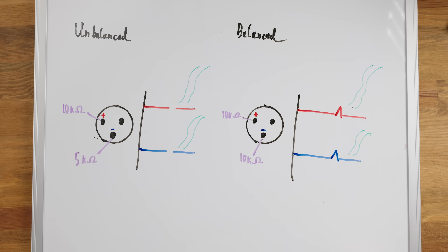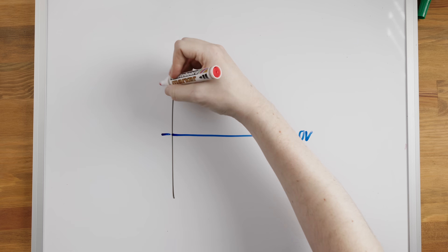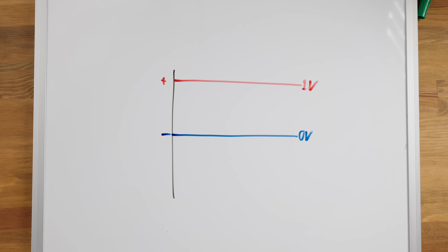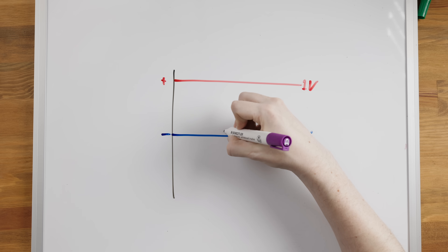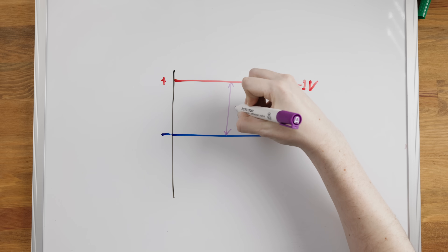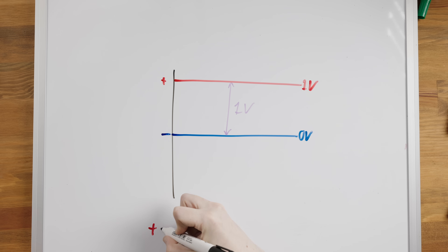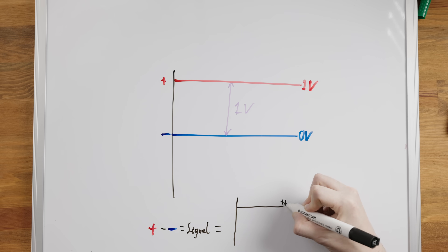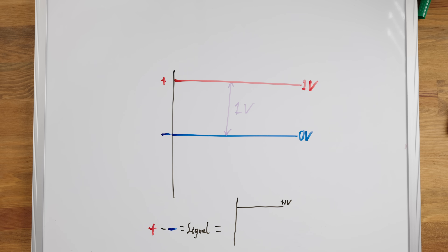In a balanced connection, external EMI will induce the same noise in both conductors since they have equal impedances to ground, unlike our unbalanced example where the differing impedance to ground on the two conductors yields a different induced voltage in each. With a simple flat and constant DC signal as an example, in an ideal scenario there's no noise, so the receiving device sees the difference between the positive and the negative and we get a clean signal: one volt minus zero volts equals one volt.